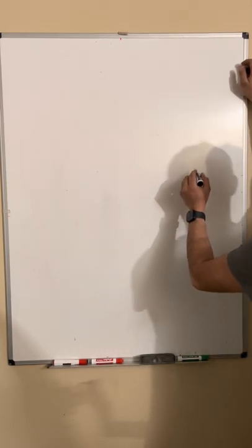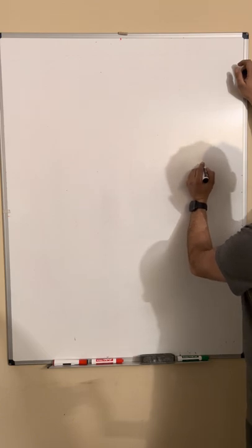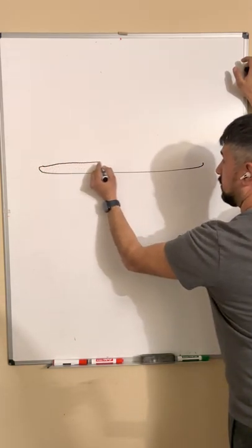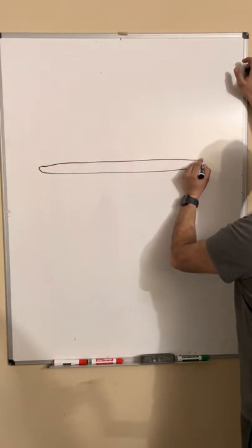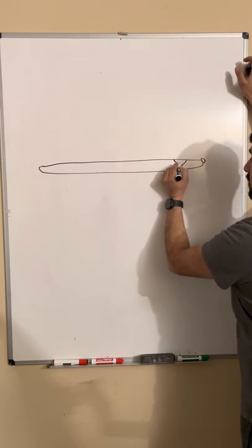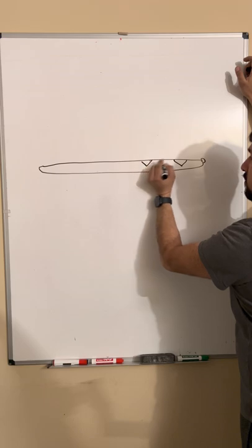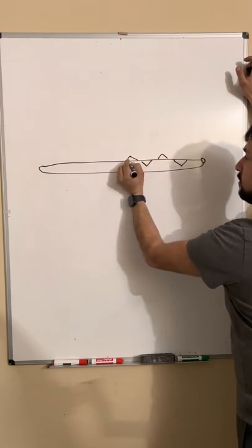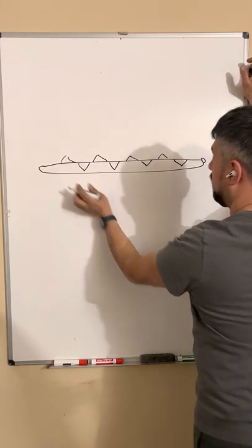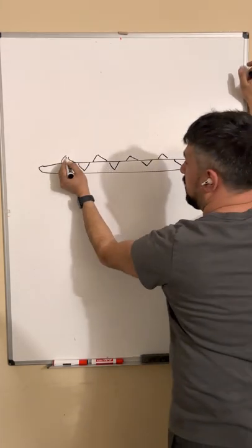So coxswains, I'm going to draw the boat in different views. This is the side view, kind of goes like this, and got a little bow ball here. Then we have riggers that kind of come like this. I drew the wrong side, but that doesn't matter. So that's what the boat looks like.